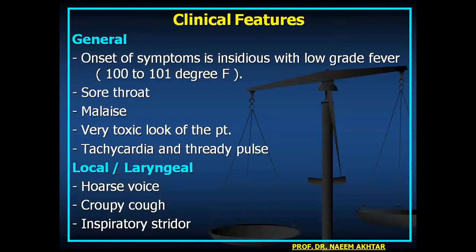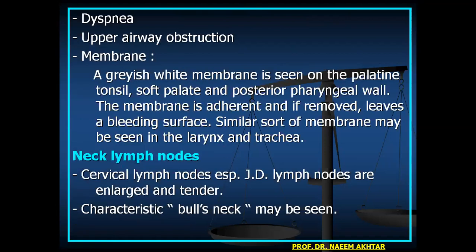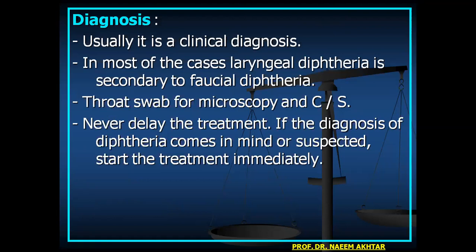General features include insidious onset fever, sore throat, malaise, toxic appearance, tachycardia, and thready pulse. Local laryngeal symptoms are hoarseness, croupy cough, and inspiratory stridor, dyspnea, and upper airway obstruction. A grayish-white membrane on palatine tonsils, soft palate, and posterior pharyngeal wall is adherent and bleeds on removal. A similar membrane may be seen in the larynx and trachea. Jugulo-digastric lymph nodes are enlarged and tender, with possible bull's neck. Diagnosis is usually clinical — in most cases laryngeal diphtheria is secondary to pharyngeal diphtheria.